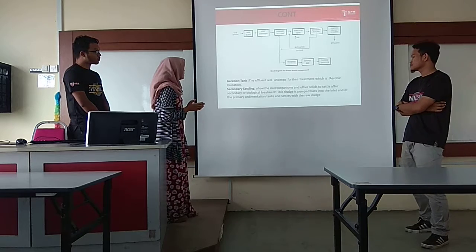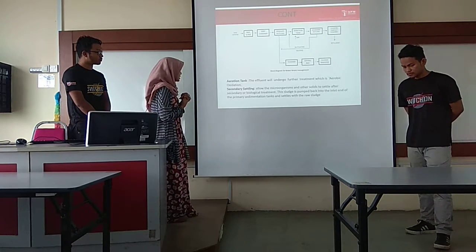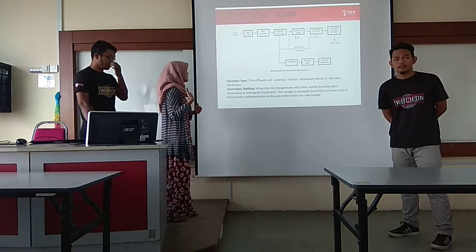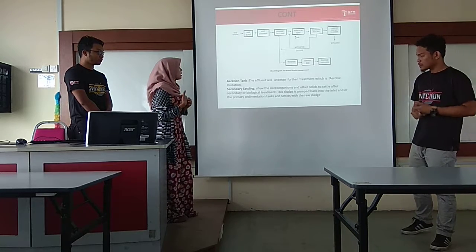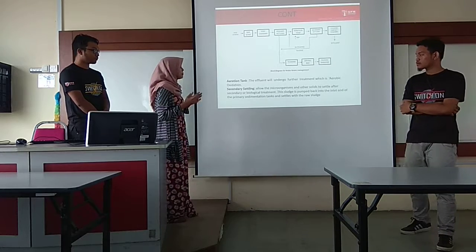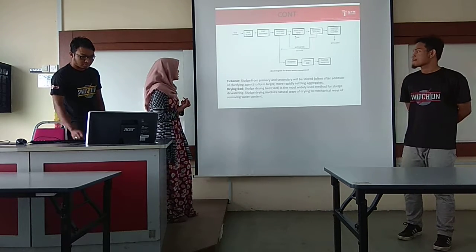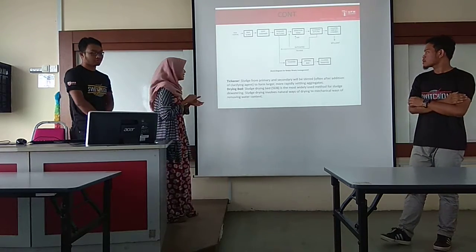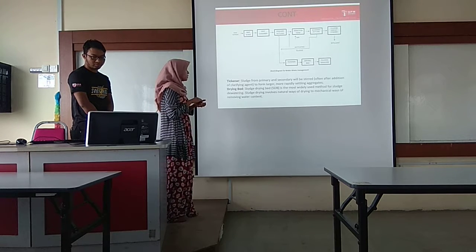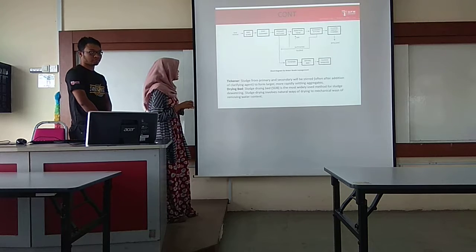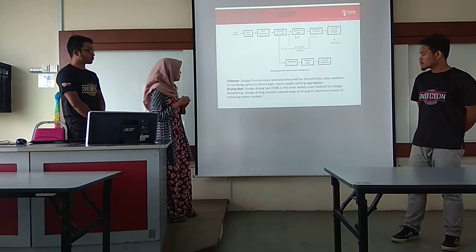For secondary treatment, the sludge will undergo an aeration tank where the influent will undergo aerobic oxidation. After that, it will be transferred to secondary settling, which allows the microorganisms and other solids to settle. After secondary or biological treatment, this sludge is pumped back into the inlet end of the primary sedimentation tank. Sludge from primary and secondary will enter the thickener, where it will be combined with clarifying agents to form larger, more settling aggregates. Lastly, the sludge drying bed is the most widely used method for sludge dewatering.